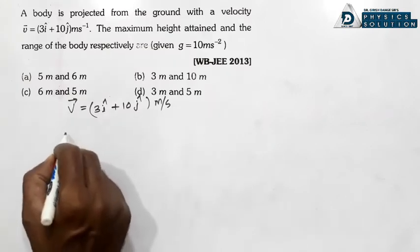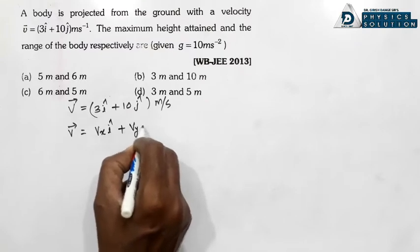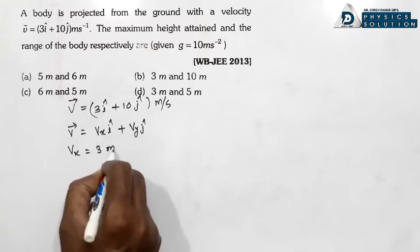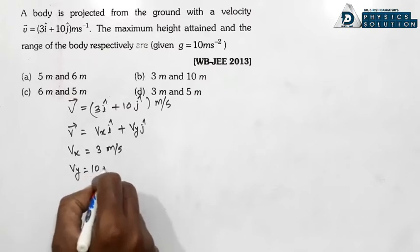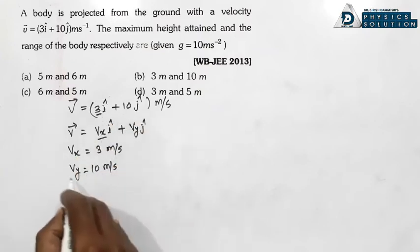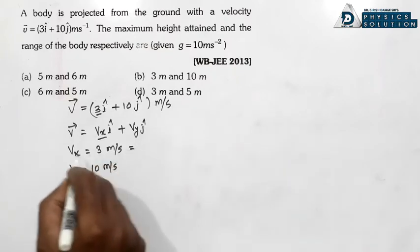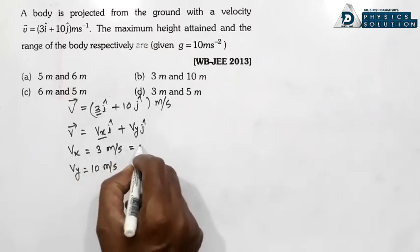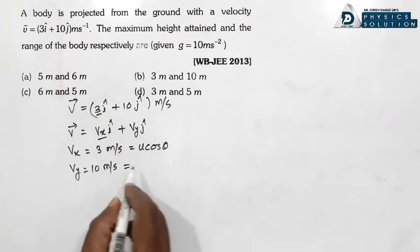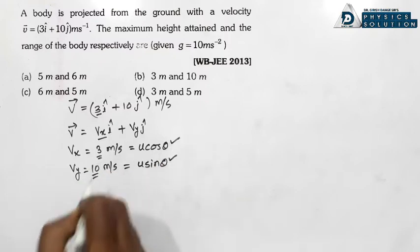Vector v = vx î + vy ĵ se compare karne par: vx = u cosθ = 3 m/s aur vy = u sinθ = 10 m/s. X-axis matlab horizontal velocity u cosθ = 3, aur vertical component u sinθ = 10.